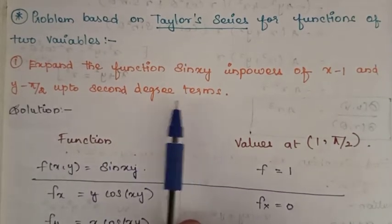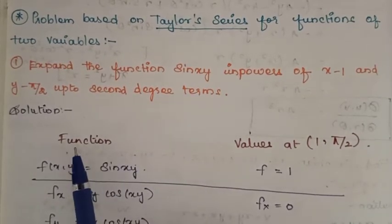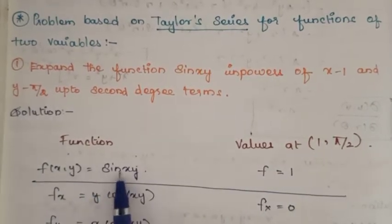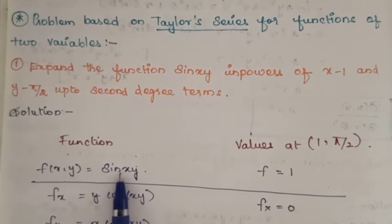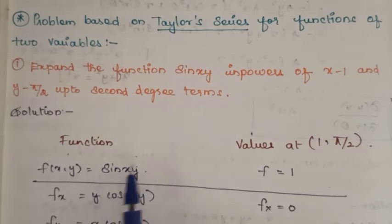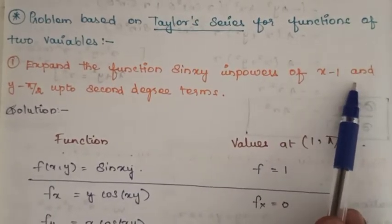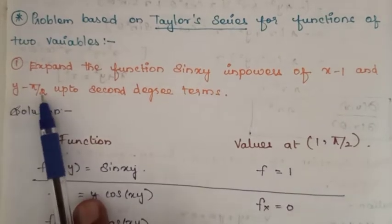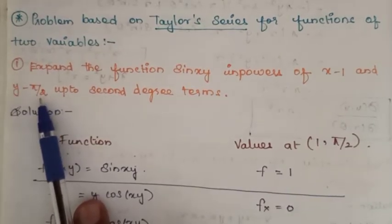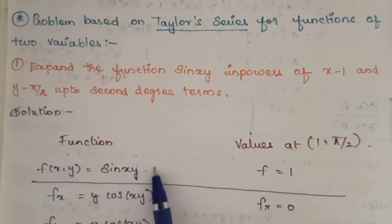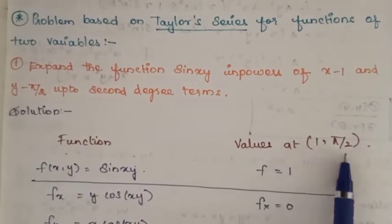So for the solution, first take the given function f(x, y) = sin(xy). From the expansion point, x minus 1 = 0 gives x = 1, and y minus π/2 = 0 gives y = π/2. So the values are a = 1 and b = π/2.